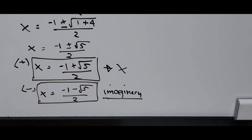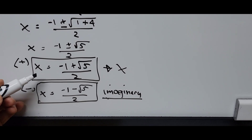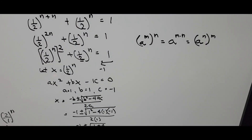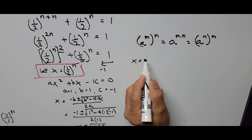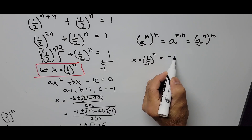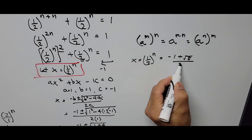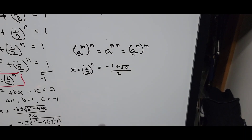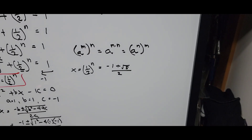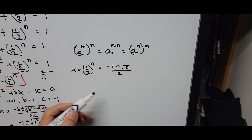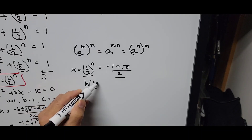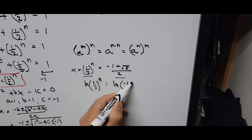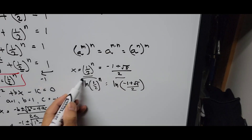Since x = (1/2)^n, we substitute back: (1/2)^n = (−1 + √5) / 2. To extract the value of n, we apply the natural logarithm to both sides. Taking ln of both sides: ln((1/2)^n) = ln((−1 + √5) / 2).